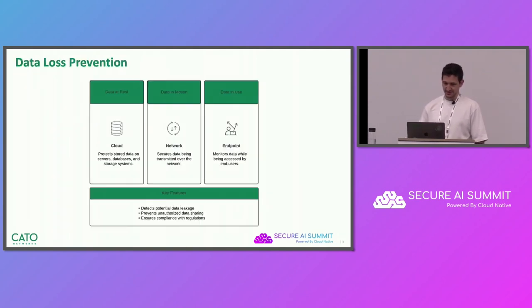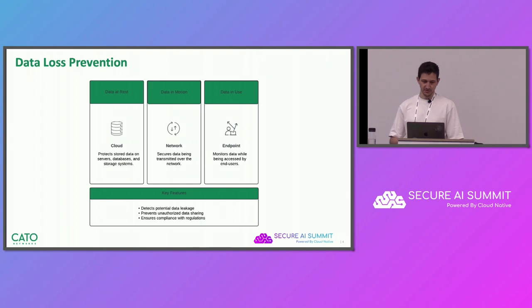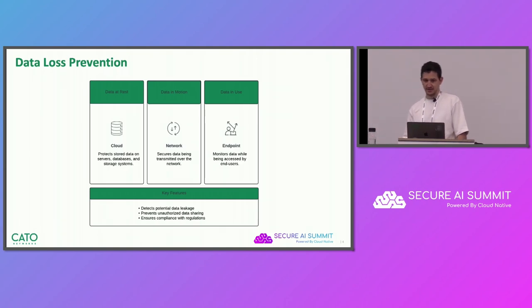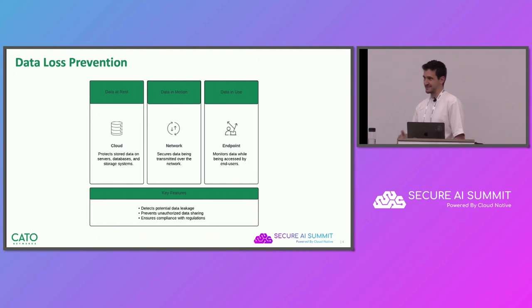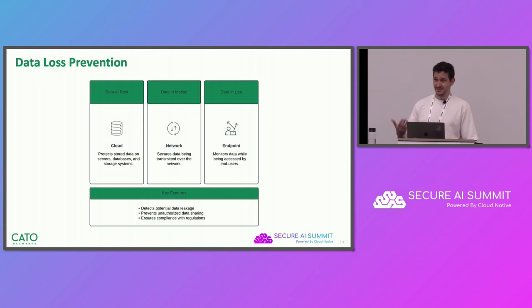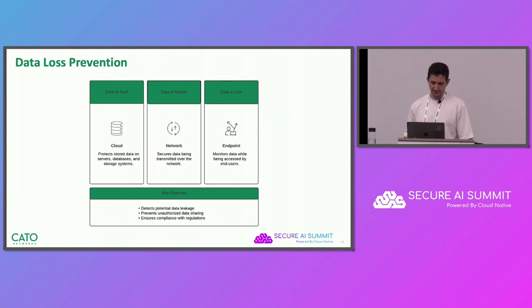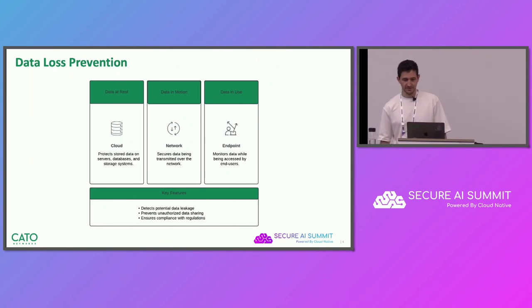A DLP solution aims to prevent misusage of sensitive data. Sensitive data could be really any data that is meaningful to the company, whether it's the company's data or its customers' data. Misusage could be a lot of things — data being exfiltrated outside the network by a malicious actor, an employee leaking data by mistake unintentionally, or just not following the compliances and regulations of the company or an external organization like the GDPR.